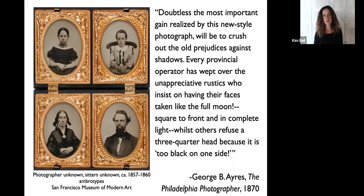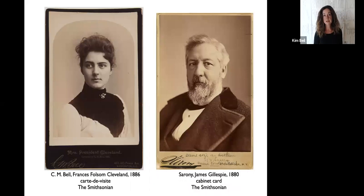One critic wrote of Rembrandt effect portraits that, quote, doubtless the most important gain realized by this new style photograph will be to crush out all the old prejudices against shadows. Every provincial operator has wept over the unappreciative rustics who insist on having their faces taken like the full moon, square to the front and in complete light, whilst others refuse a three-quarter head because it is too black on one side. So of course I hear racialized language in this quote, as well as classist language, deriding those rustics for trying to emulate the styles of the metropolitan elite. By 1870 critics of the style were already emerging, and they described Rembrandt effects pictures as unusual and extravagant. Others claimed that the technique had so completely saturated the market that all portraits were beginning to look the same.